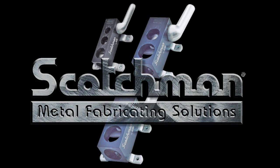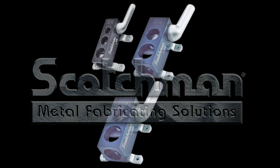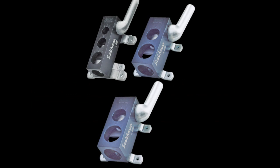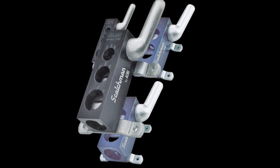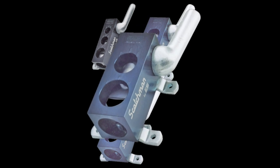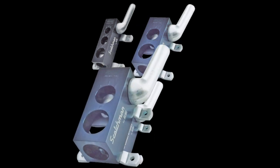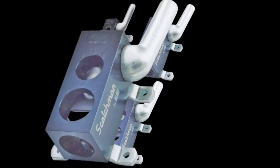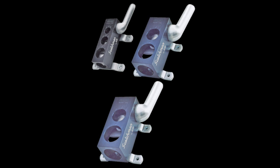Scotchman Metal Fabricating Solutions has a line of tube and pipe notchers: the AL-1, AL-2, and the AL-3. These are manual tube and pipe notchers.